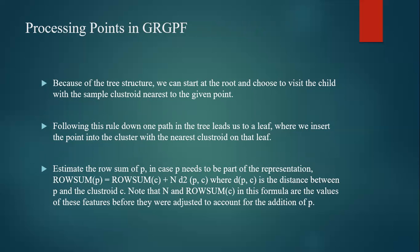Processing points in the algorithm: because of the tree structure, we can start at the root and choose to visit the child with the sample clusteroid nearest to the given point. Following this rule down one path in the tree leads us to a leaf, where we insert the point into the cluster with the nearest clusteroid on the leaf. The row sum estimate of point P is: row sum of P equals row sum of C plus N times the distance between point P and C. Note that N and row sum of C in this formula are the values before they are adjusted to account for the addition of P.